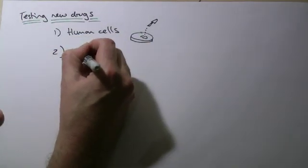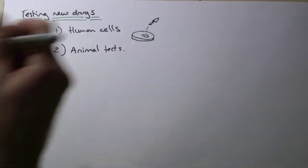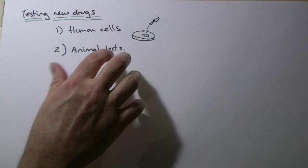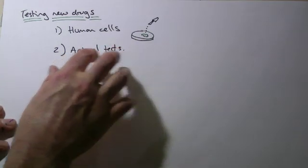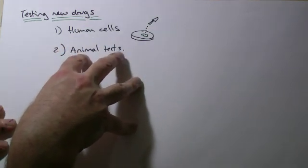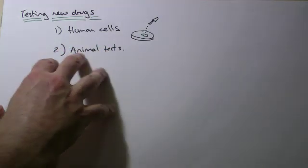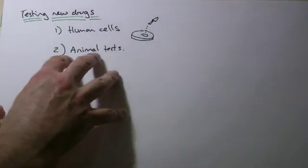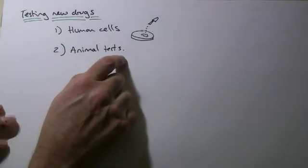The second stage is the controversial one probably, which is animal tests. Before you're allowed to sell and market drugs for humans, they have to be tested on animals first. Now there are a lot of ethical issues about this. Some people would disagree very strongly with it, other people would agree that it is something that's very important. So you might get asked questions about the ethics of this, is it right or wrong to do this?